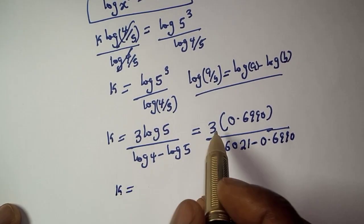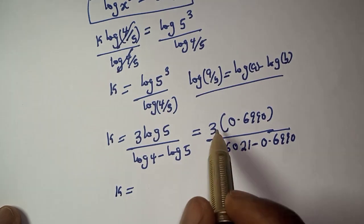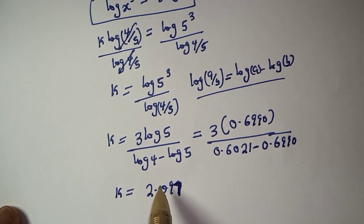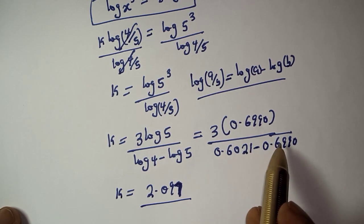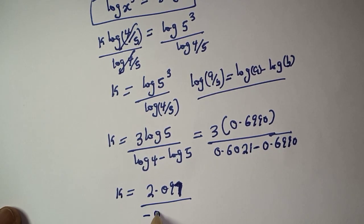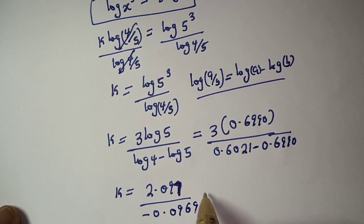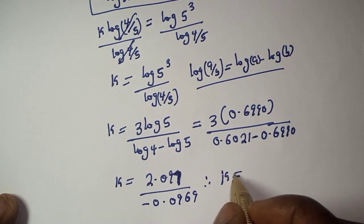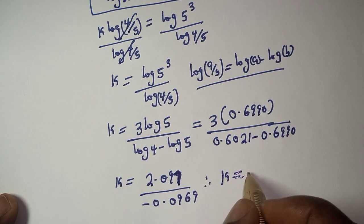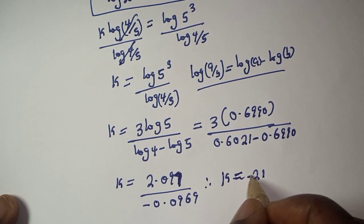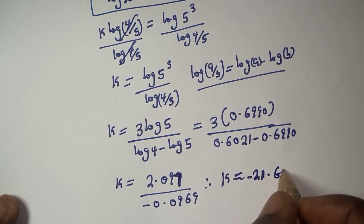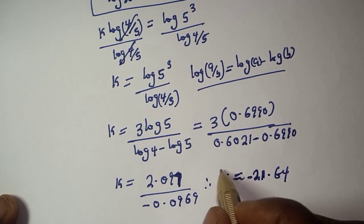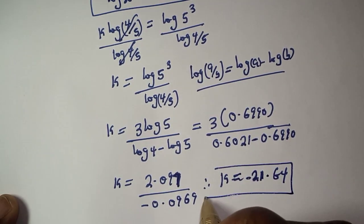K is equal to, if you multiply 3 by 0.6990 we have 2.097, divided by, if you subtract 0.6990 from 0.6021 we have minus 0.0969. Therefore, k is approximately equal to minus 21.64. This is the final answer.